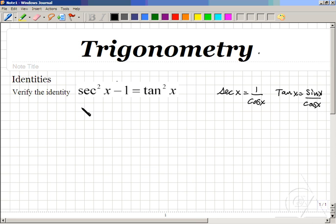So to rewrite these, 1 over cosine squared x minus 1 equals sine squared x over cosine squared x.